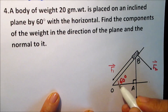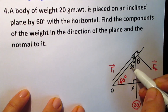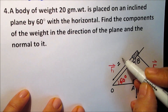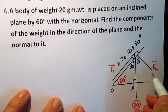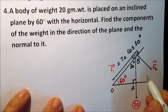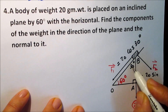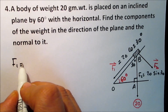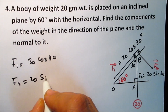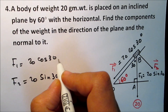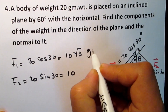F1 is the component adjacent to the 30-degree angle, so F1 equals the weight times cosine(30). F2 equals the weight times sine(30). Therefore F1 equals 20·cosine(30) = 10√3 gram weight, and F2 equals 20·sine(30) = 10 gram weight.